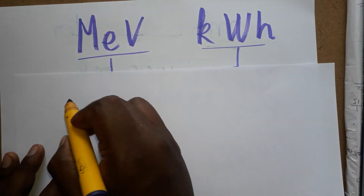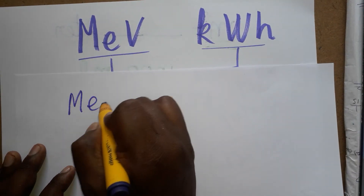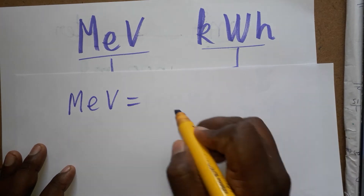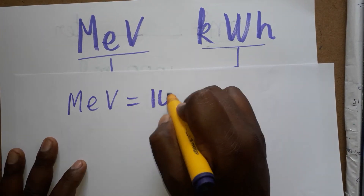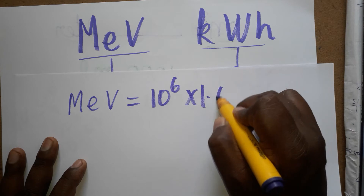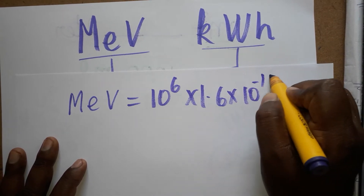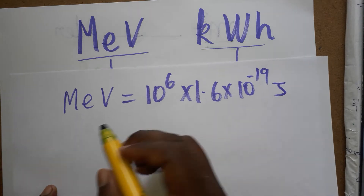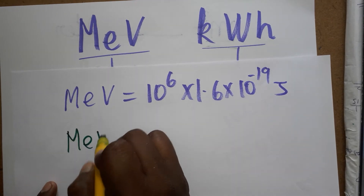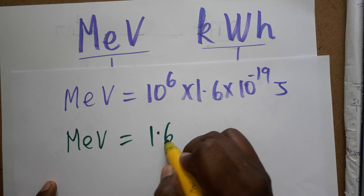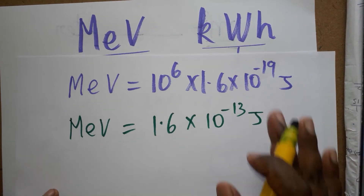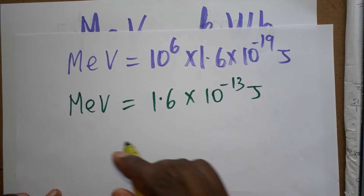Now we are going to learn which is greater. MeV — mega electron volt or million electron volt — equals how many joules? Mega is 10 to the power 6, and one electron volt is 1.6 into 10 to the power minus 19 joules. So one mega electron volt equals 1.6 into 10 to the power minus 13 joules.